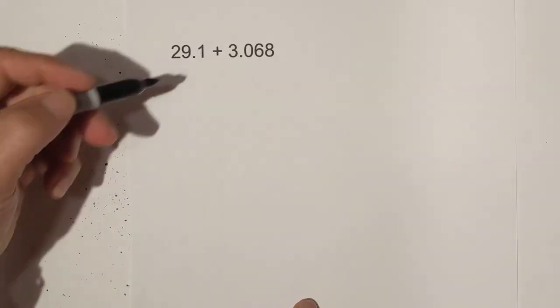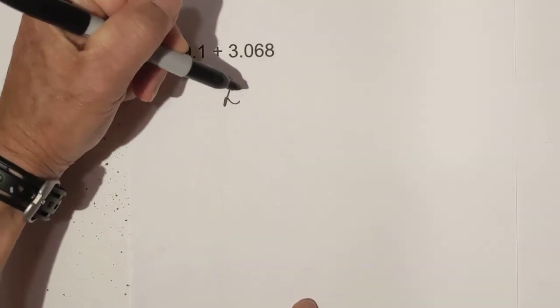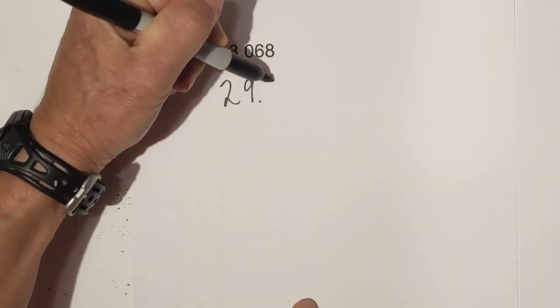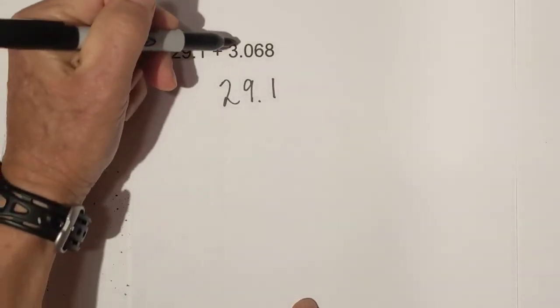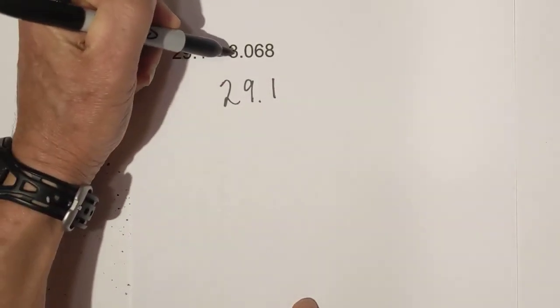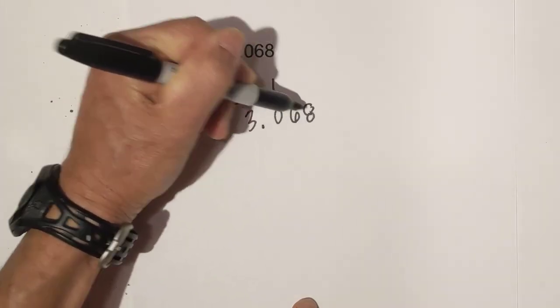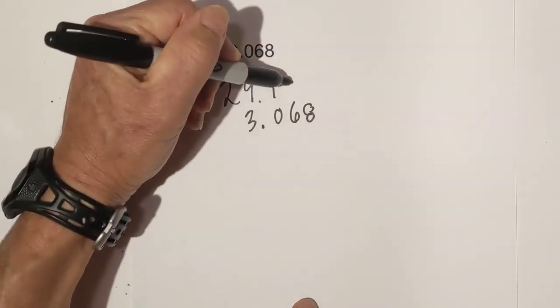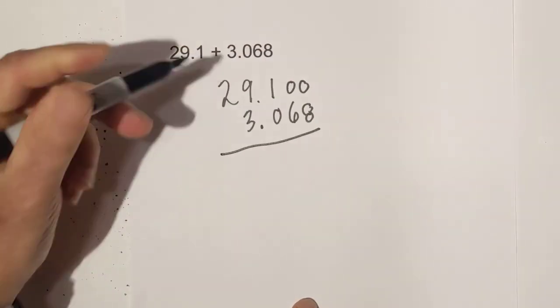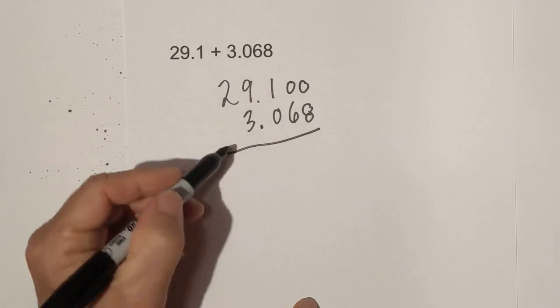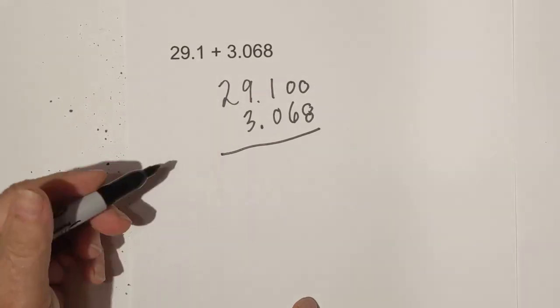Let's work another one. I'm going to repeat the same process. Remember, the key is lining up the decimal points. I'm going to rewrite the three and line up the decimal point. I'm going to place two placeholder zeros. Now I just add.